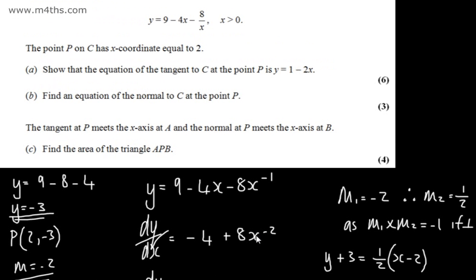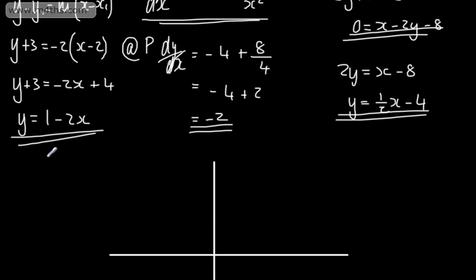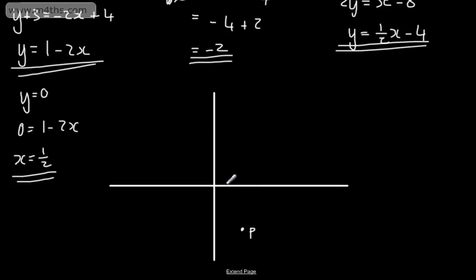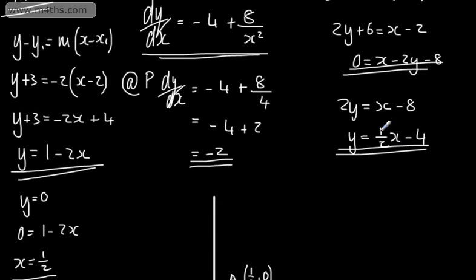For point A, the tangent crosses the x-axis, so setting y equals 0 in y equals 1 minus 2x gives 0 equals 1 minus 2x, so x equals one half. Therefore A is (1/2, 0). For point B, the normal meets the x-axis, so setting y equals 0 in y equals one half x minus 4 gives 0 equals one half x minus 4, so x equals 8, giving B at (8, 0).